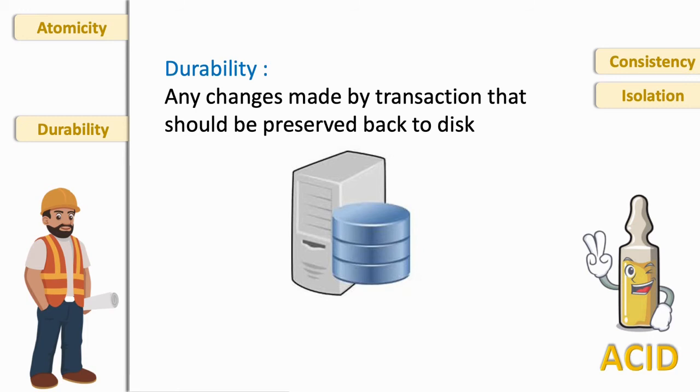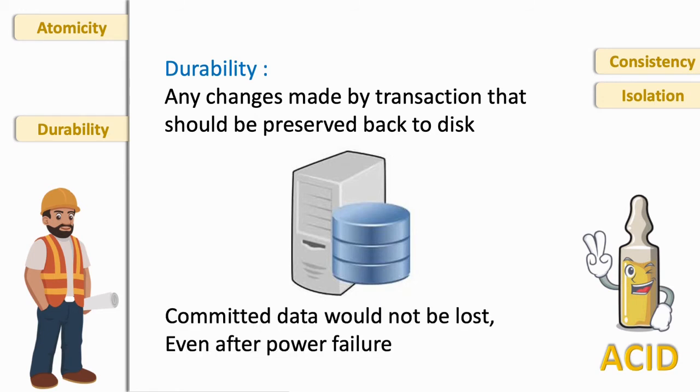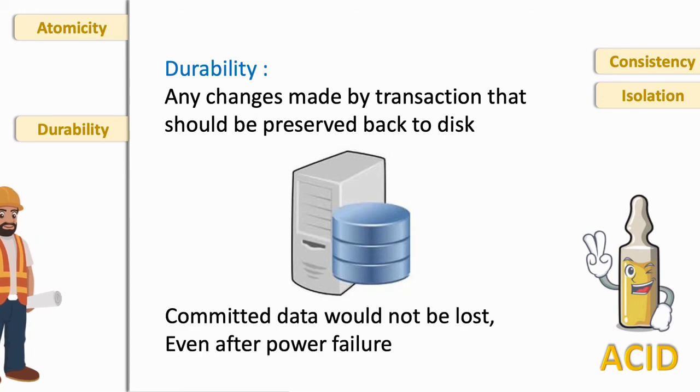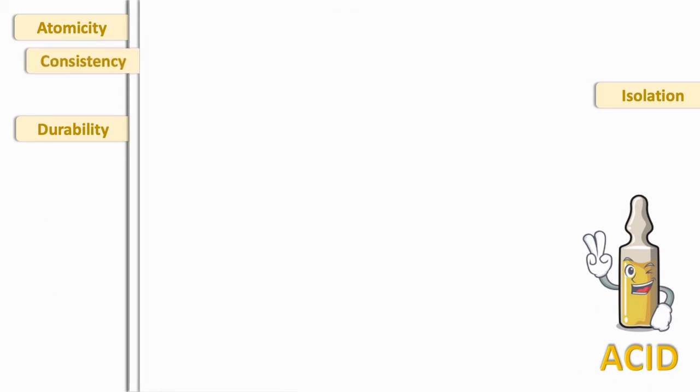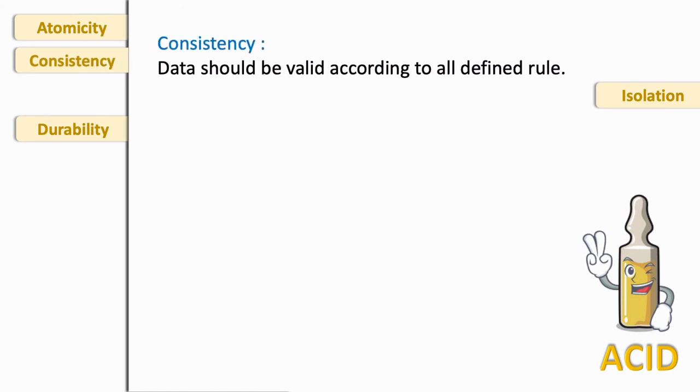In short, committed data should not be lost even after power failure. The next one is consistency. This rule says data should be valid according to all defined rules at any given point. Each transaction run by itself with no concurrent execution of other transactions must preserve consistency at any given point.